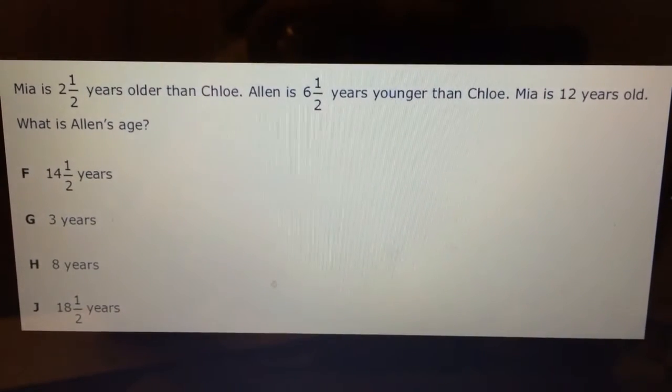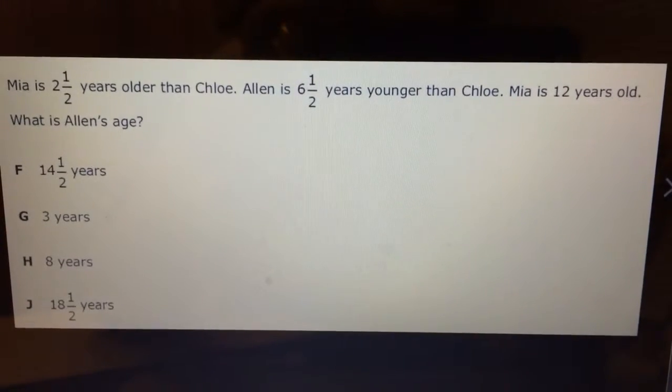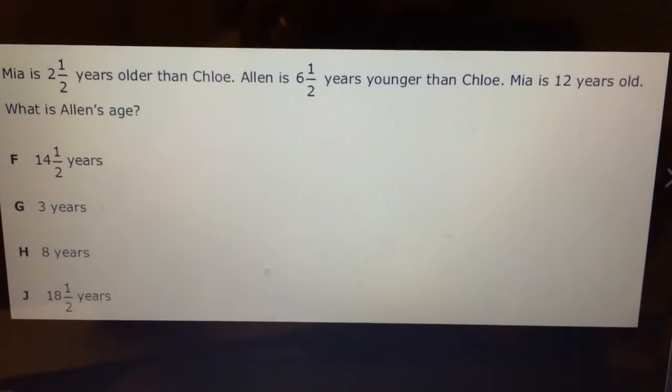Mia is 2½ years older than Chloe. Alan is 6½ years younger than Chloe. Mia is 12 years old. What is Alan's age?